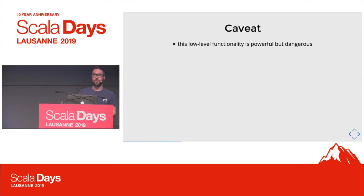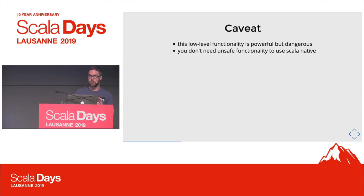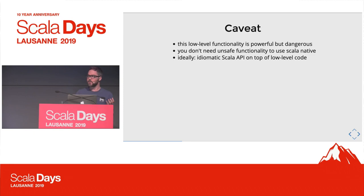All of this adds up to basically an embedded Scala DSL with the capabilities of C, with all the power and danger that go with that. This is very low-level computing — powerful but dangerous. The best practice we've settled on as a community is to provide safe, idiomatic Scala APIs on top of the low-level code. Library authors and language maintainers should worry about the unsafe stuff, not end users, who should really just see ordinary Scala.